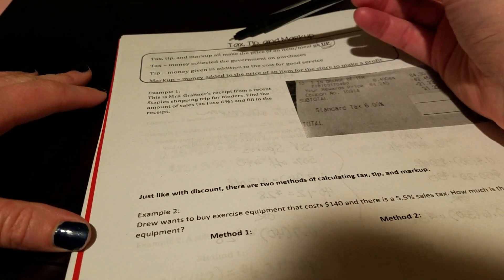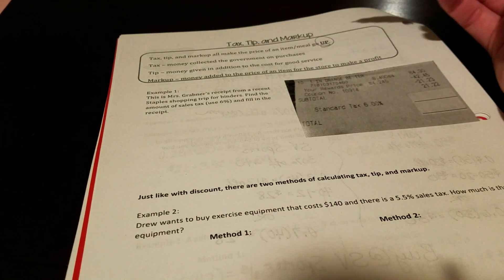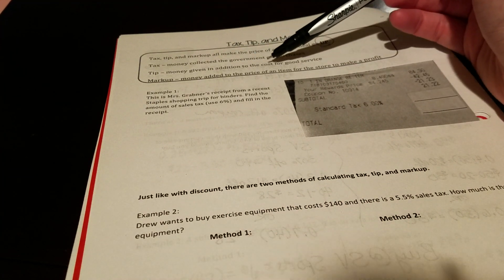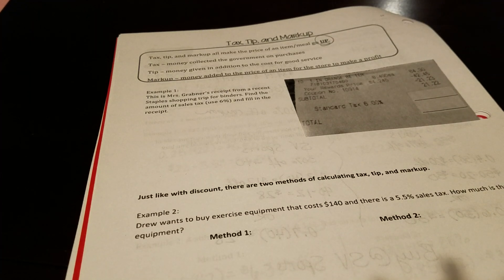Tax is basically money collected by the government on purchases, and your tip is money that's given in addition to the cost for good service.